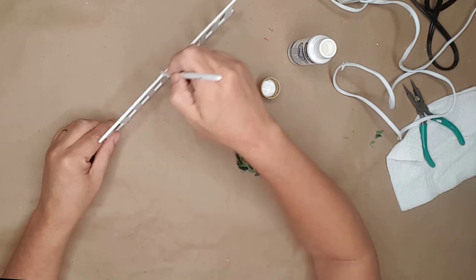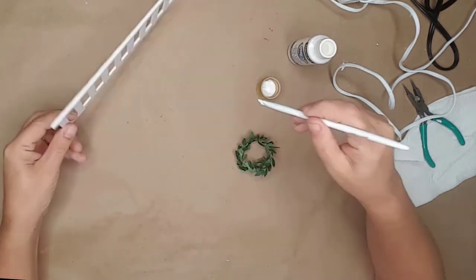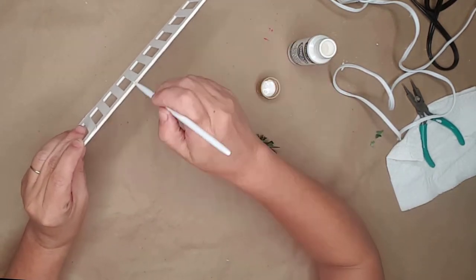I used some white acrylic paint to paint the sides of the ladder to cover up any of the sanding marks.